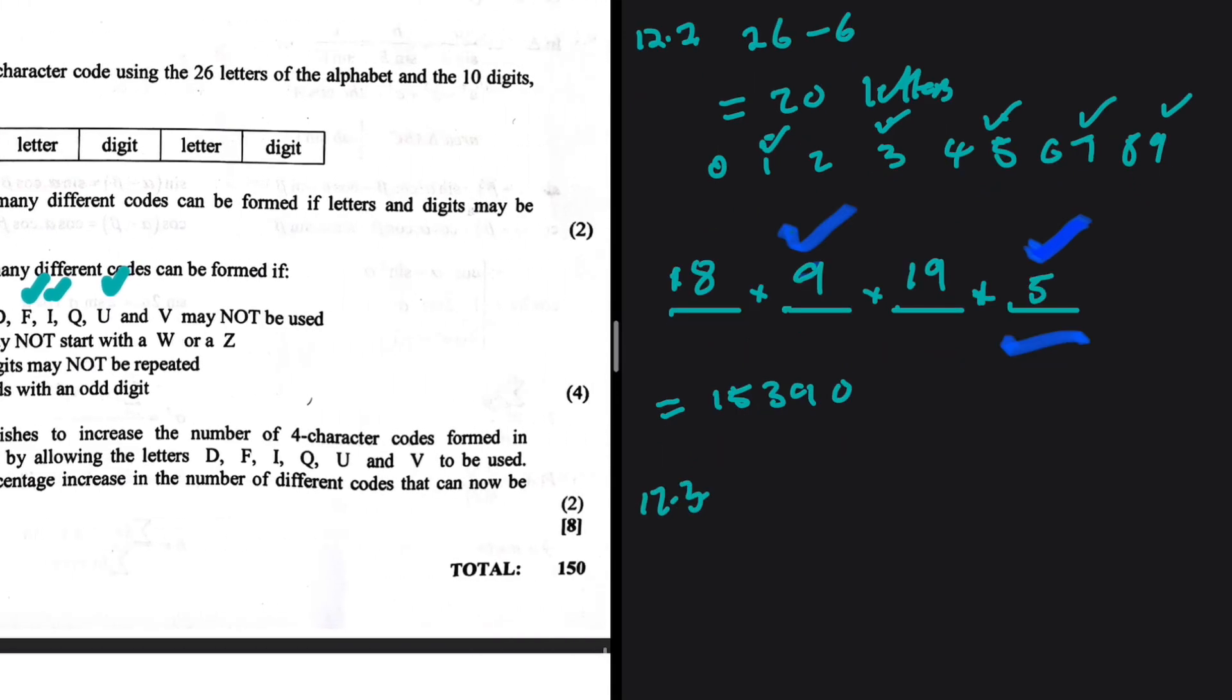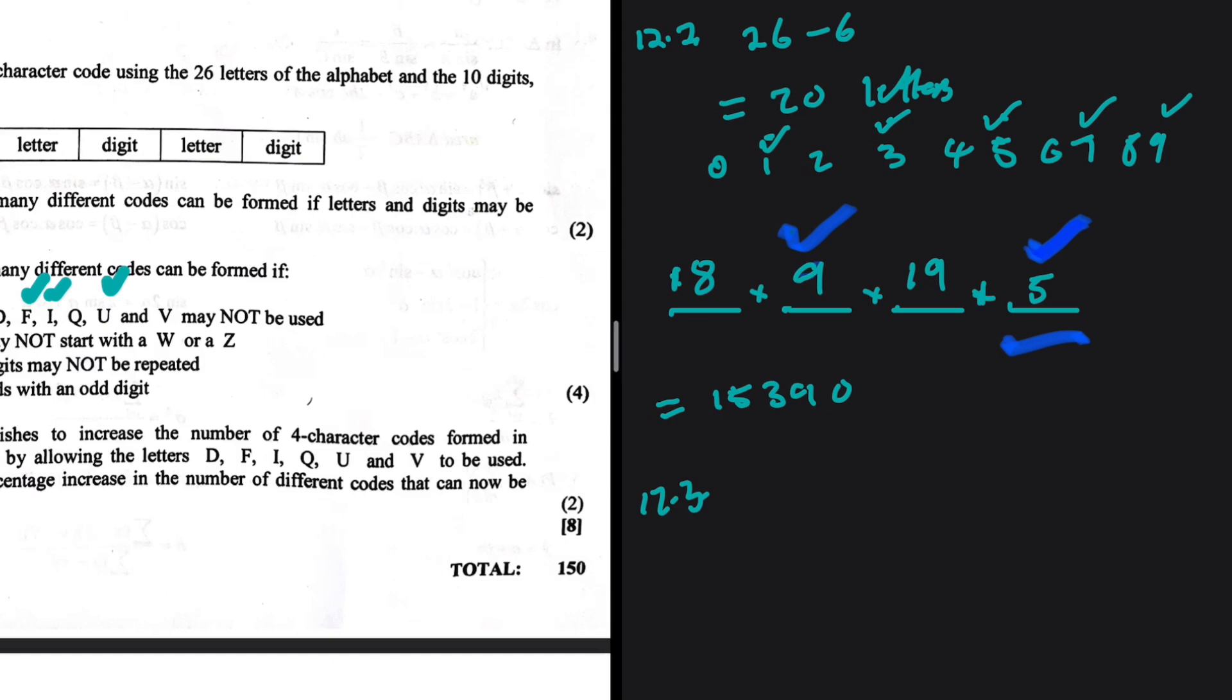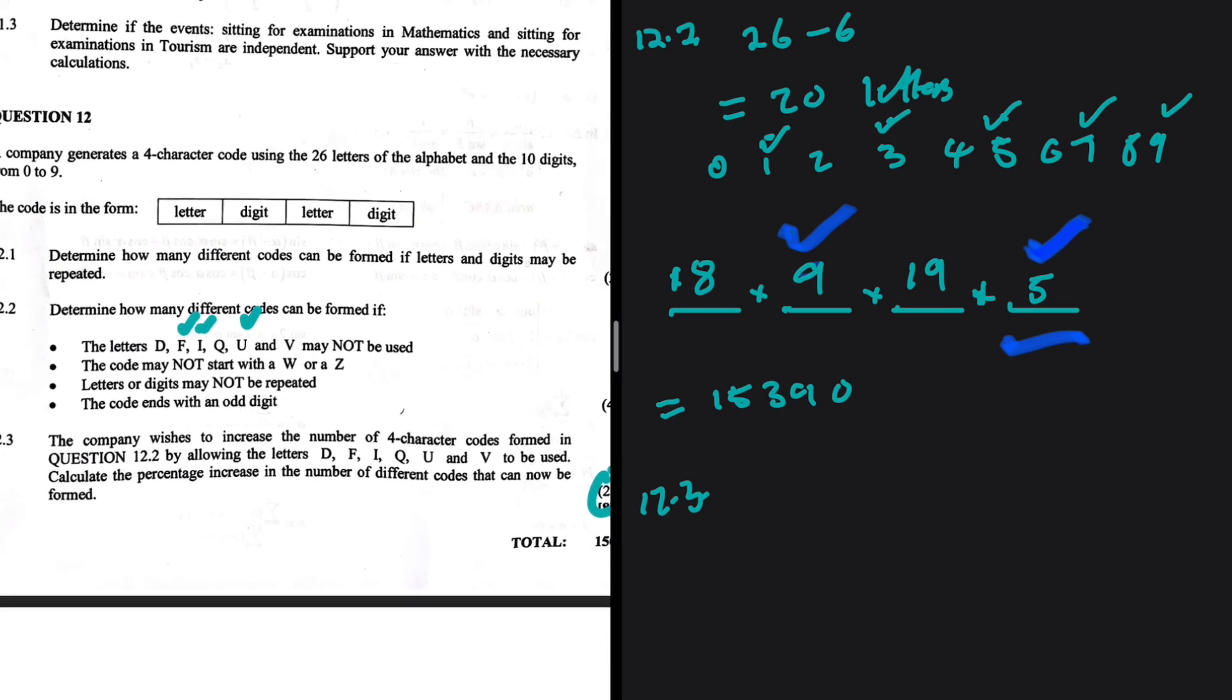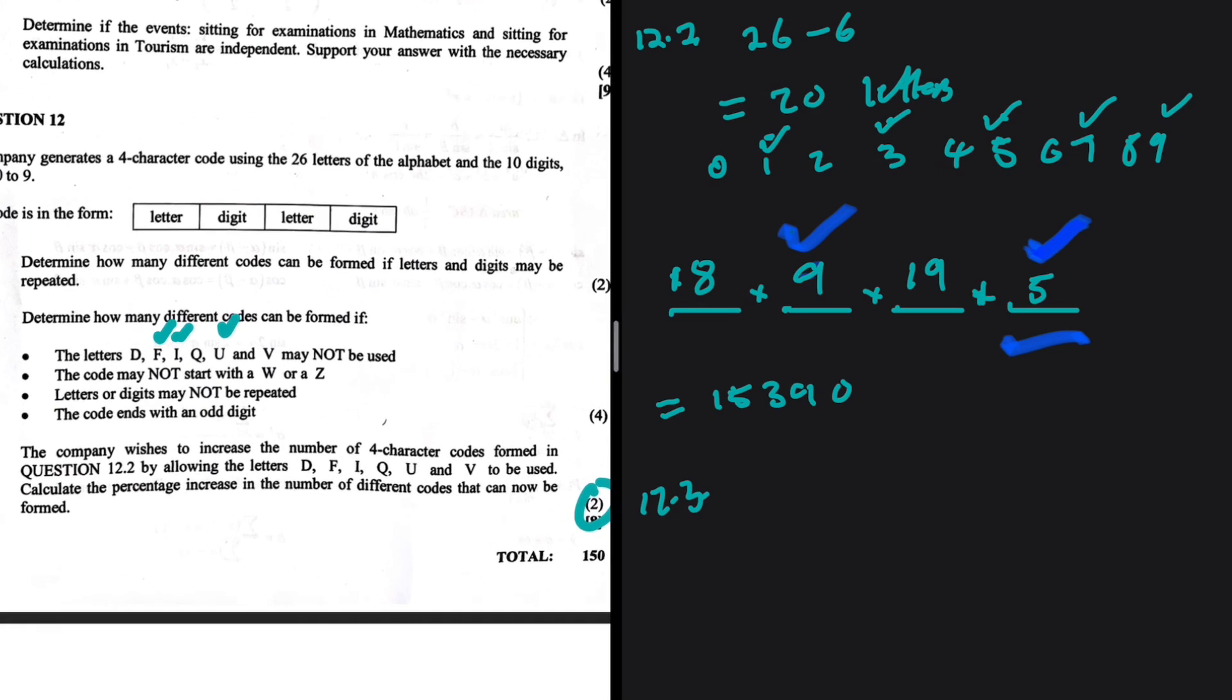Let's take a look at 12.3. It's just out of two marks. Calculate the percentage increase in the number of different codes that can now be found. So how do you answer this question? What is your solution? Can you write it down in the comments? I'd like to see what your answer is.